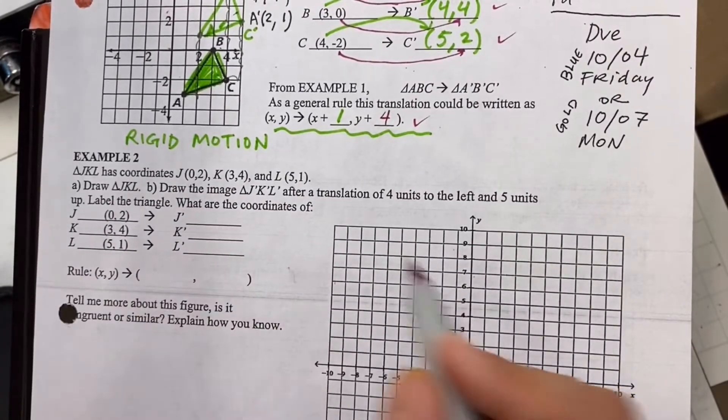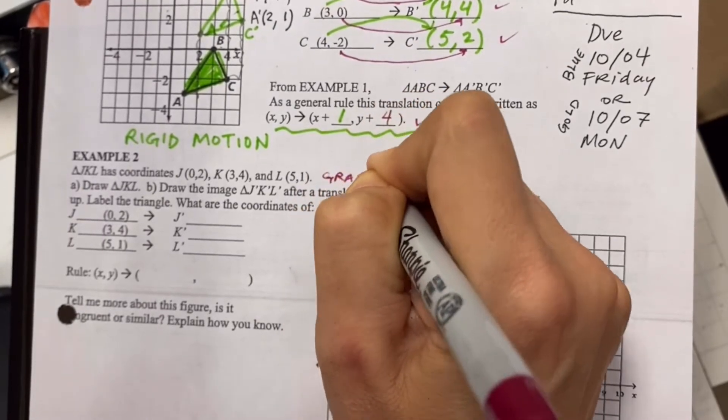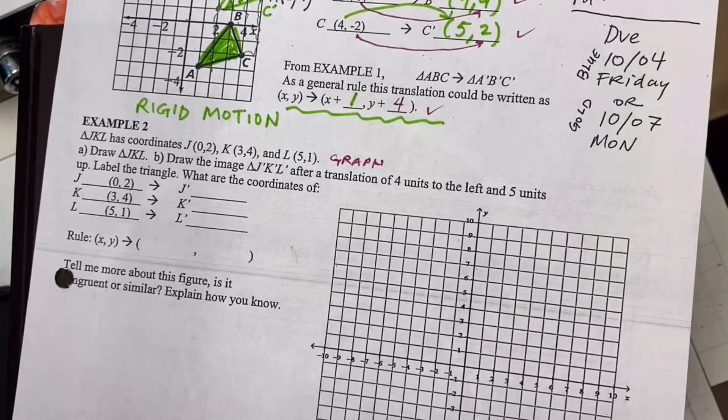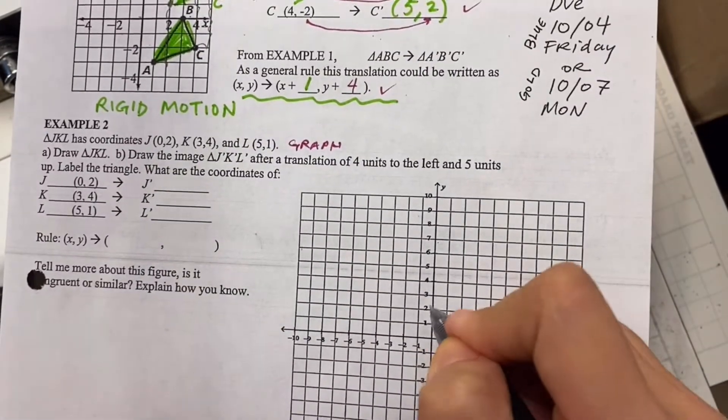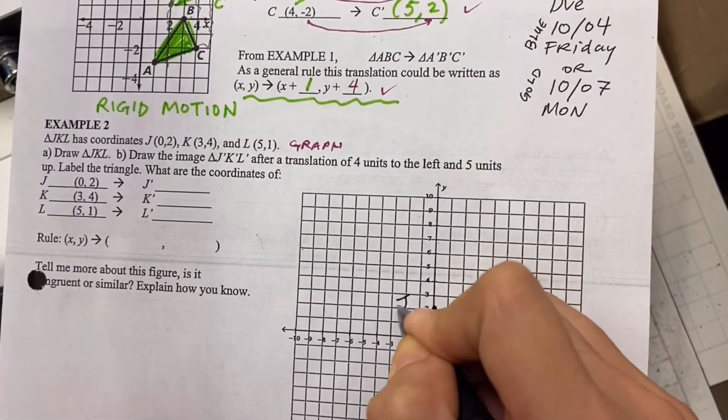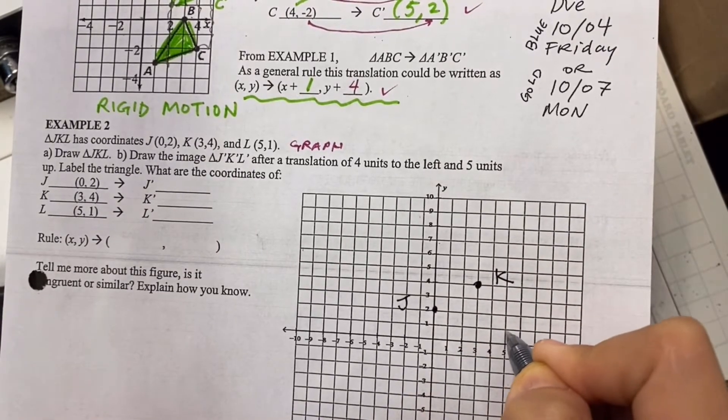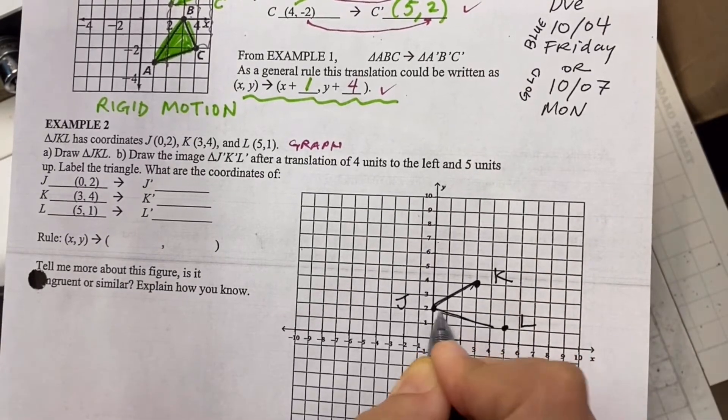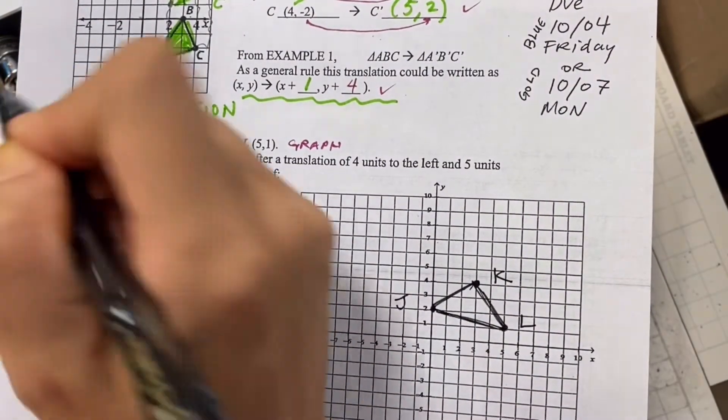Now let's look at our next example. It says J, K, L has these coordinates. So we have to graph it. So you might want to graph with a pencil in case you accidentally have to change a coordinate. Zero, two. Three, four. Five, one.